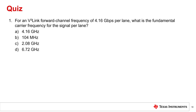Let's take a quick quiz to test your knowledge. For a vCubeLink forward channel frequency of 4.16 gigabits per second per lane, what is the fundamental carrier frequency for the signal per lane? Is it A, 4.16 gigahertz; B, 104 megahertz; C, 2.08 gigahertz; or D, 6.72 gigahertz? The answer is C, 2.08 gigahertz. Remember, the vCubeLink data channel uses NRZ signaling, which results in 2 bits per clock period.